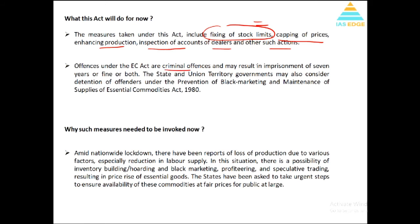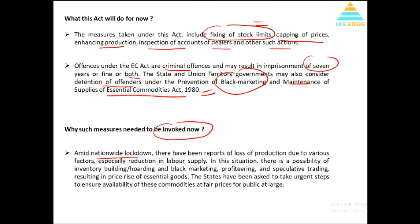It is a very draconian law with strong criminal offenses — if you are found violating this law, you can go to prison for up to seven years, and heavy fines can be imposed. States may also consider detention of offenders under the Prevention of Black Marketing and Maintenance of Supplies of Essential Commodities Act. Amid the nationwide lockdown, there have been reports of loss of production due to various factors, especially in labor supply, creating a possibility of inventory building, hoarding, and black marketing.